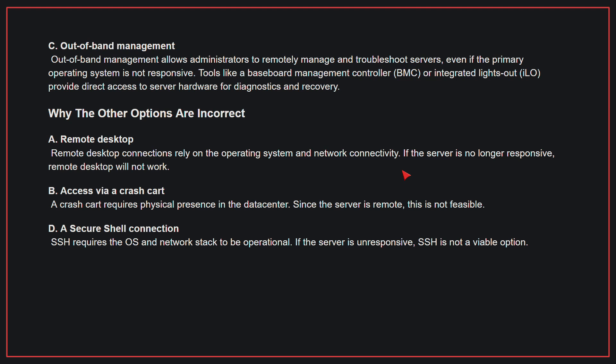Why the other options are incorrect: A, Remote desktop — remote desktop connections rely on the operating system and network connectivity; if the server is no longer responsive, remote desktop will not work. B, Access via a crash card — a crash card requires physical presence in the data center; since the server is remote, this is not feasible. D, A secure shell connection — SSH requires the OS and network stack to be operational; if the server is unresponsive, SSH is not a viable option. Therefore, the correct answer is C: Out-of-band management.